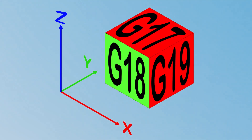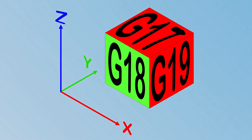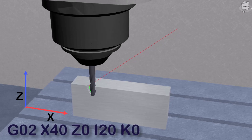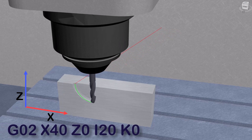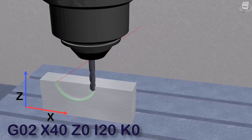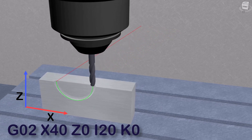Next, we have G18, which selects the ZX plane. When G18 is active, any circular motion commands will be executed in the ZX plane. In this G-code line, the machine makes a clockwise arc in the ZX plane from the current position to the point X40, Z0, with a radius defined by the offsets I20, K0.